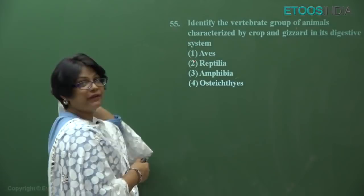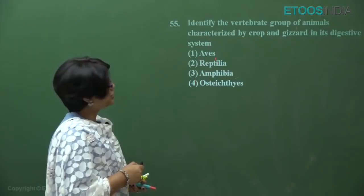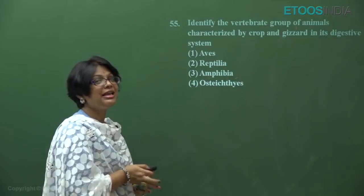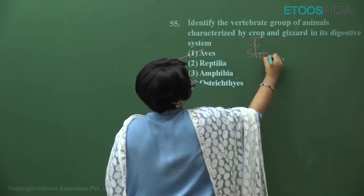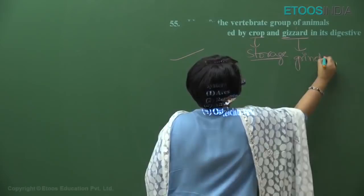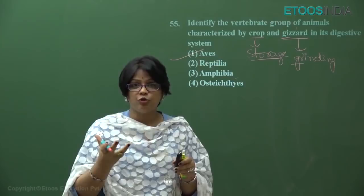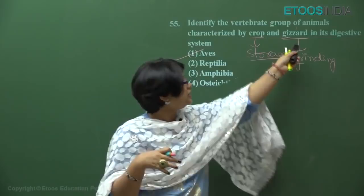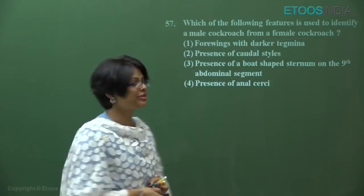Question number 55: which vertebrate group has crop and gizzard in its digestive system? This is a direct NCERT question — birds have two additional chambers: the crop for storage of food, and the gizzard (G for gizzard, G for grinding). Modern living birds are toothless, so grains stored in the crop are later ground by the gizzard for digestion. This is a direct character of birds or Aves.